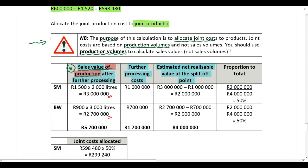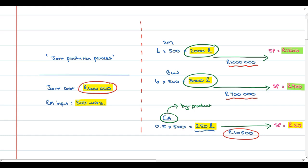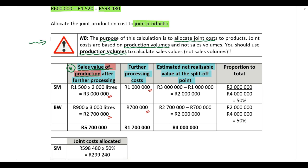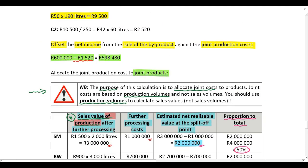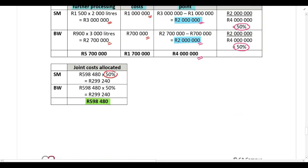The calculations show that the estimated net realizable value at the split-off point totals 4 million Rand — 2 million for SM and 2 million for BW. This means 50% relates to SM and 50% to BW, since both have exactly the same net realizable value at the split-off point. When allocating the joint costs — which are the costs after offsetting the byproduct net income, not the full 600,000 Rand — we allocate 50% to SM and 50% to BW.